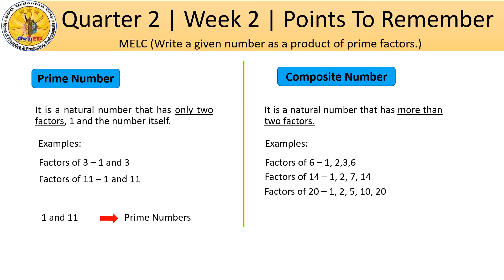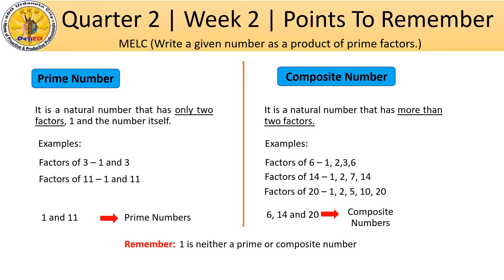The factors of 20 are 1, 2, 5, 10, and 20. So 6, 14, and 20 are called composite numbers. Remember, 1 is neither a prime nor a composite number. 2 is the only even prime number.